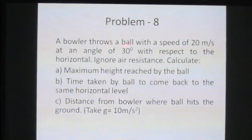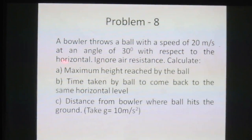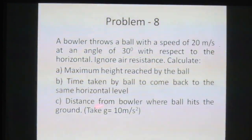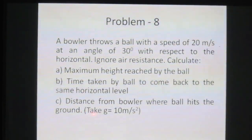Problem: A baller throws a ball with a speed of 20 m/s at an angle of 30 degrees with respect to the horizontal. Ignore air resistance. Calculate the maximum height reached by the ball, the time taken by the ball to come back to the same horizontal level (ground), the distance from the baller where the ball hits the ground. G is equal to 10 m/s².